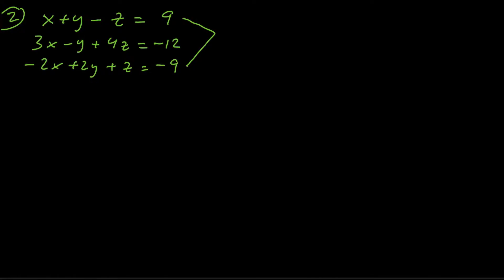Adding equations one and three: x plus negative 2x is negative x, y plus 2y is 3y, the z's cancel, and 9 plus negative 9 is 0. So we get negative x plus 3y equals 0. Now we've used the first and third equations, so we need to use the second equation — and we need to stick with eliminating the z's.